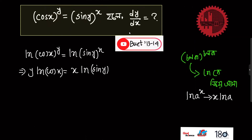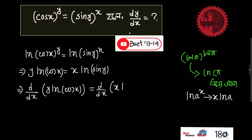Now let's write the derivative of both sides with respect to x. If we have a product u times v, we can write d/dx of uv equals to u times dv/dx plus v times du/dx — that is the product rule.